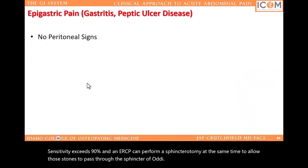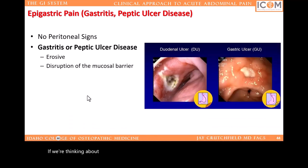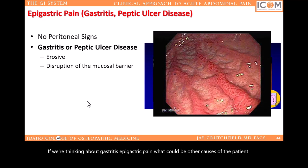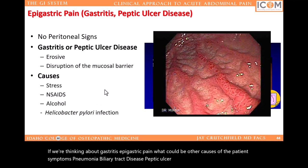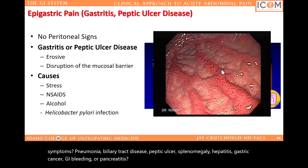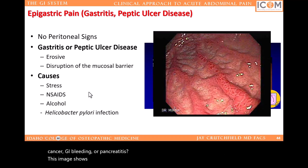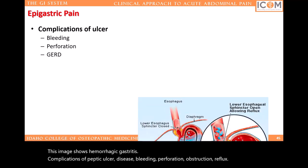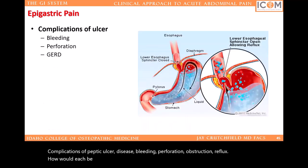If we're thinking about gastritis and epigastric pain, what could be other causes of the patient's symptoms? Pneumonia, biliary tract disease, peptic ulcer, splenomegaly, hepatitis, gastric cancer, GI bleeding, or pancreatitis. This image shows hemorrhagic gastritis. Complications of peptic ulcer disease include bleeding, perforation, obstruction, and reflux. How would each be diagnosed? How would you treat each of them? What can you think of that would cause gastric outlet obstruction?